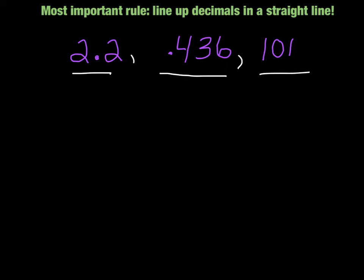When I am adding these, the most important thing to remember is that when I'm adding decimals, you need to line the decimals up into a straight line. That means when I have the decimals written down, when I'm adding them together, they're going to make a straight line up and down.